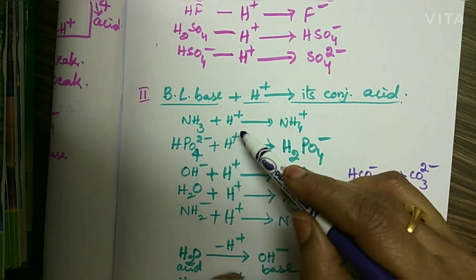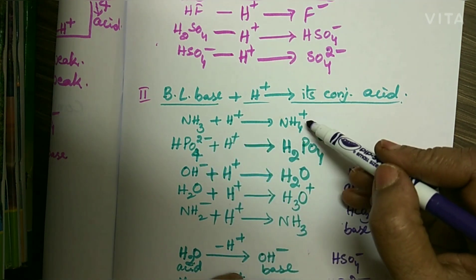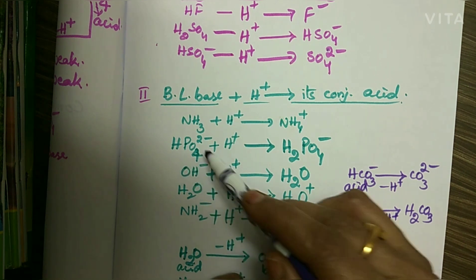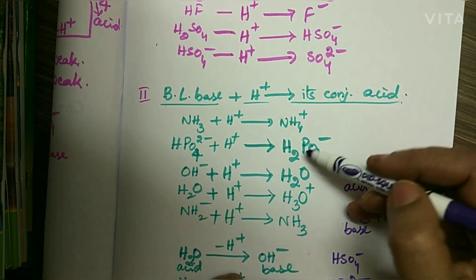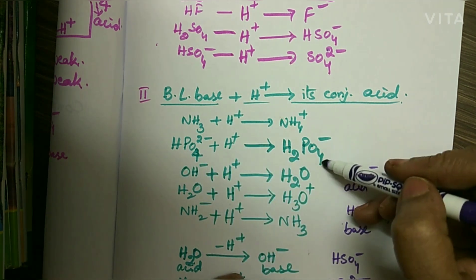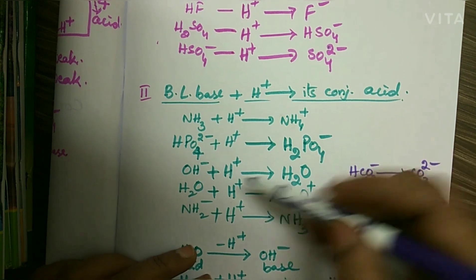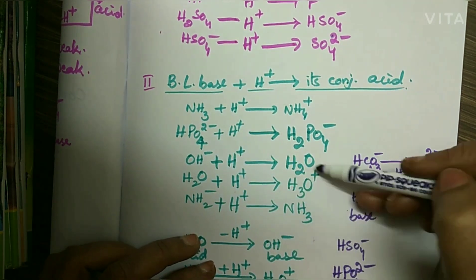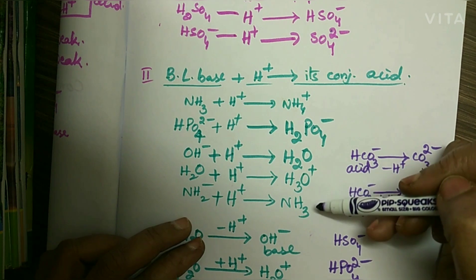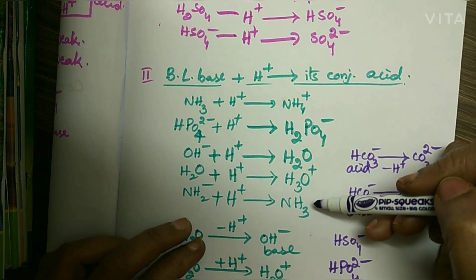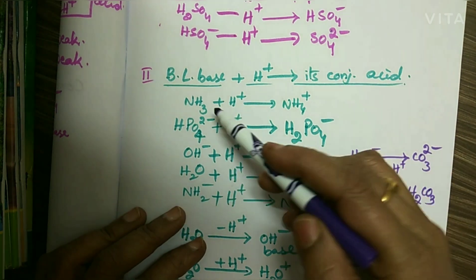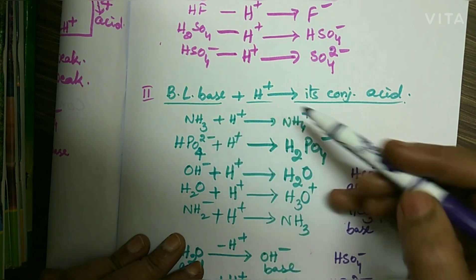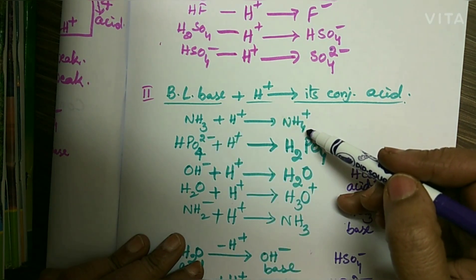NH3 plus H⁺ gives NH4⁺. And similarly, HPO4²⁻ plus H⁺ gives H2PO4⁻. These are all the conjugate acids — by adding a proton, we get their conjugate acids. Here also, NH3 is a strong base and its conjugate acid NH4⁺ is a weak acid.